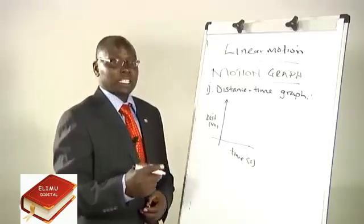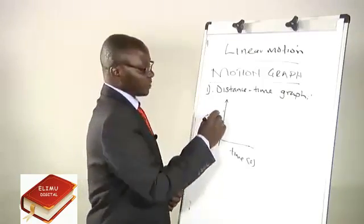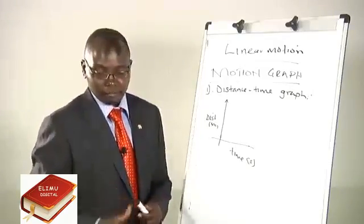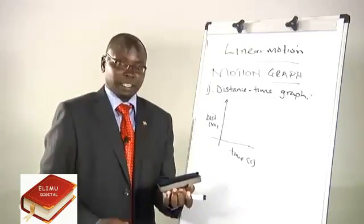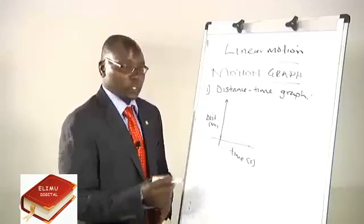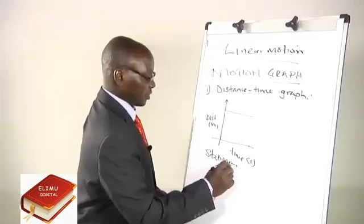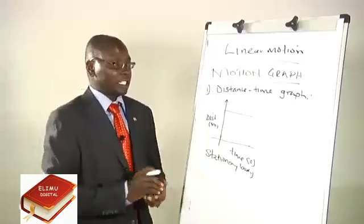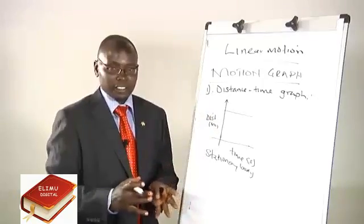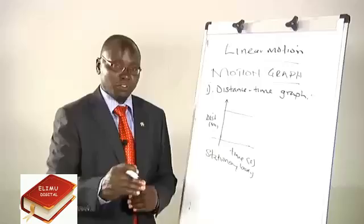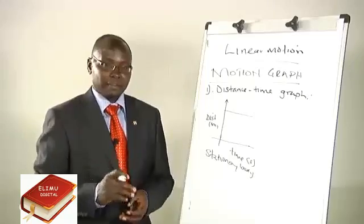The graph of a stationary body shows the line extending along the x-axis with no increase or decrease on the y-axis. That shows the body is stationary — time moves, but the distance on the y-axis shows no change. That is the graph of a stationary body.